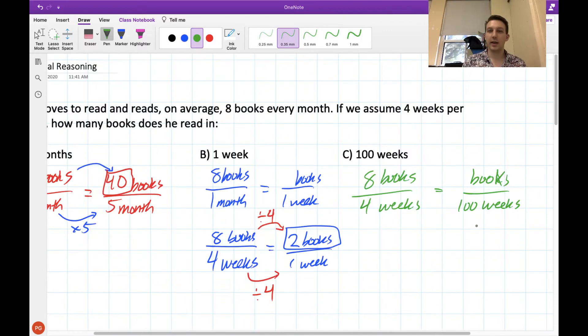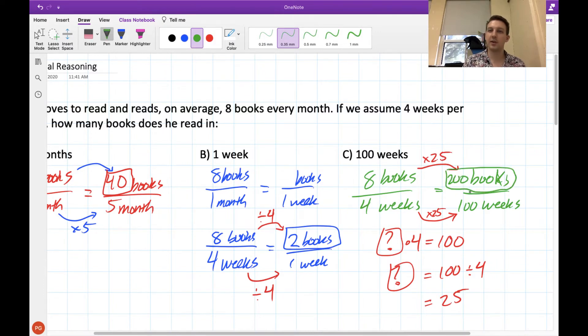What about for 100 weeks? Here, we know that it's 8 books every 4 weeks. To go from 4 weeks to 100 weeks, one way that we can figure out what this should be, what number times 4 gives us 100. That's the same as asking, what is 100 divided by 4? You punch that into your calculator, and the answer that you would get here is 25. So that tells us that we need to be multiplying by 25 to go from 4 to 100 weeks. And we need to do the same on the top here. Multiply by 25, and we would get that Jason is reading about 200 books over these 100 weeks.